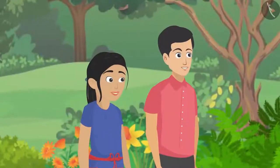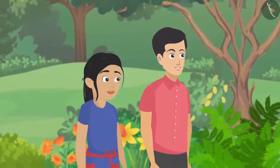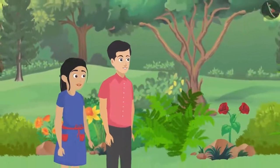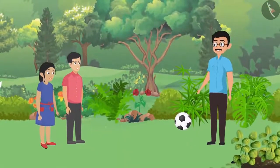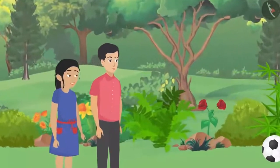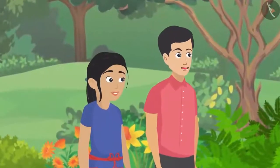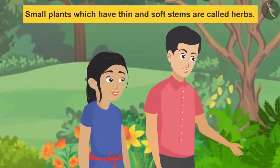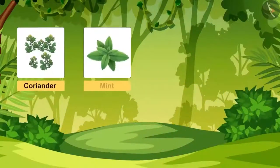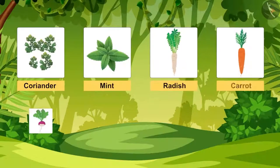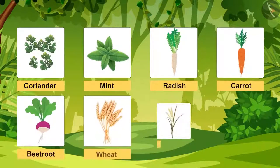Dad says he was about to mention that too, and suggests that Pankaj and he take turns explaining the types of plants so both can understand and remember better. Pankaj agrees and volunteers to start with herbs, pointing to small plants with thin and soft stems.